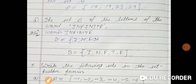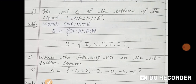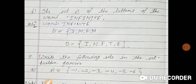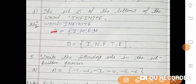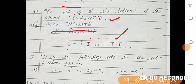D: set B of the letters of the word 'infinite.' You should not repeat the same letter. In 'infinite': i, n, f, i, n, i, t, e. Taking each unique letter once: i, n, f, t, e. So B = {i, n, f, t, e}.